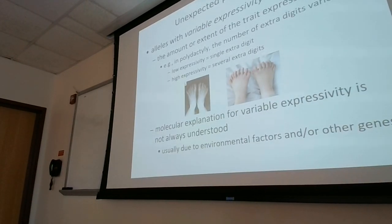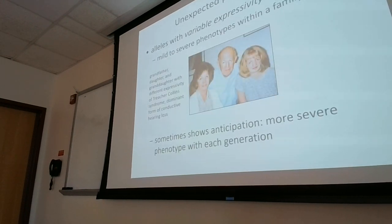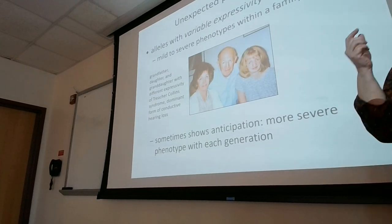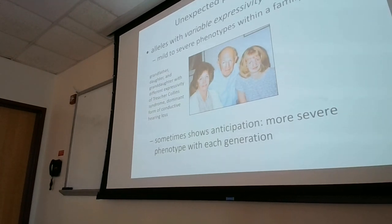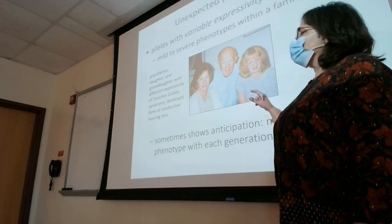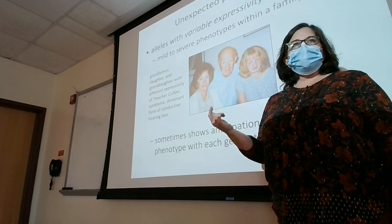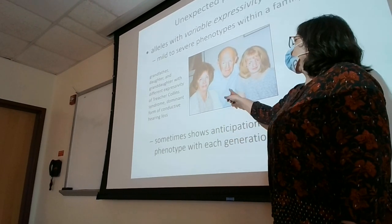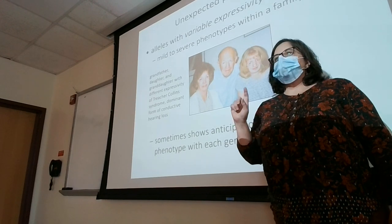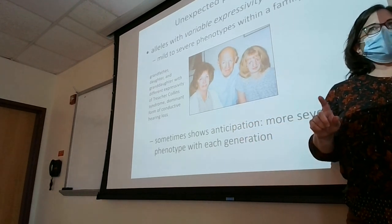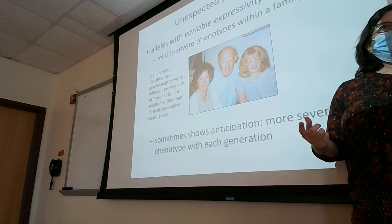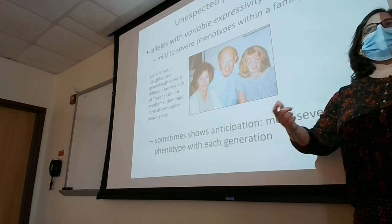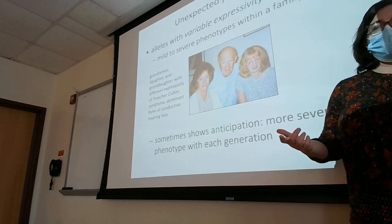A condition I actually studied was Treacher Collins Syndrome, which shows a tremendous amount of variable expressivity — you can have generations that look nothing like each other in terms of phenotype. All three individuals have the same genotype but are differently affected, and we don't know why they're differently affected. We just know that they are.